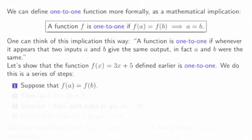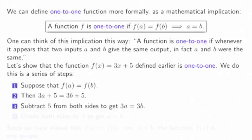Suppose that f(a) = f(b). Then 3a + 5 = 3b + 5. Subtract 5 from both sides to get 3a = 3b. Divide both sides by 3 to get a = b.